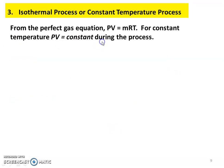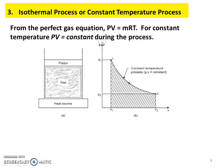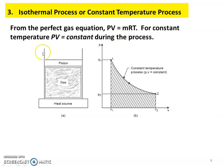The third process is the Isothermal Process or Constant Temperature Process. From the perfect gas equation PV = MRT, for constant temperature, M, R, and T are all constant, so PV equals a constant during this process. The product of pressure and volume remains constant throughout the isothermal process.